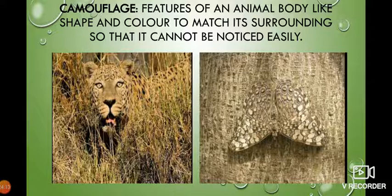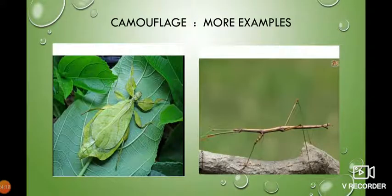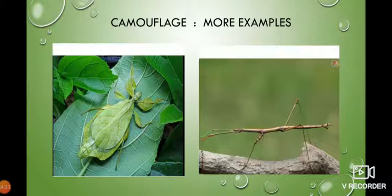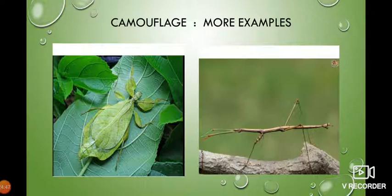In the grasslands, both the prey and the predator use camouflage — the prey to protect itself from the predator, and the predator to hunt without being noticed. See the beautiful leaf insect on the left-hand side: sitting on the leaf, it looks just like a leaf. And the stick insect on the right looks just like a piece of stick — nobody would think it is an animal. The stick insect and the leaf insect are both excellent examples of camouflage.